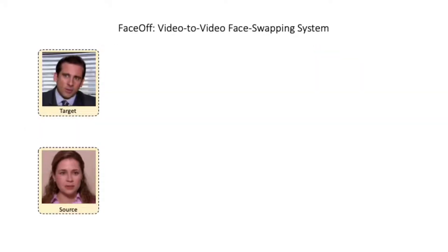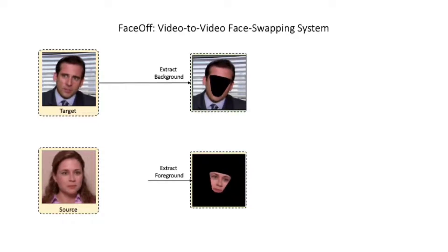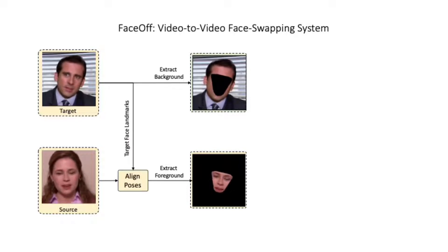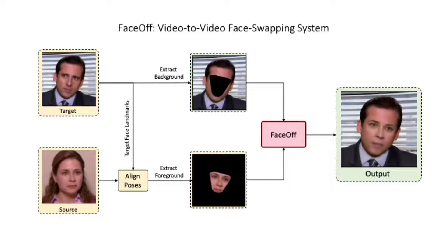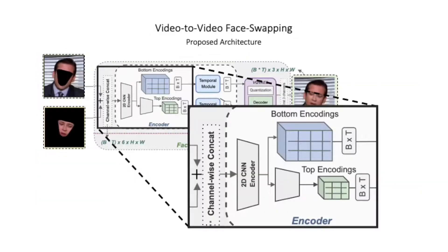To tackle this, we propose Faceoff, a video-to-video face swapping system. Faceoff takes two videos as input: the background and pose of the target, and the foreground of the source face video. The foreground poses are first heuristically aligned with the background poses using the face landmarks of the target face. Faceoff then takes both of these videos as inputs and generates a coherent and meaningful output meeting all the required constraints.